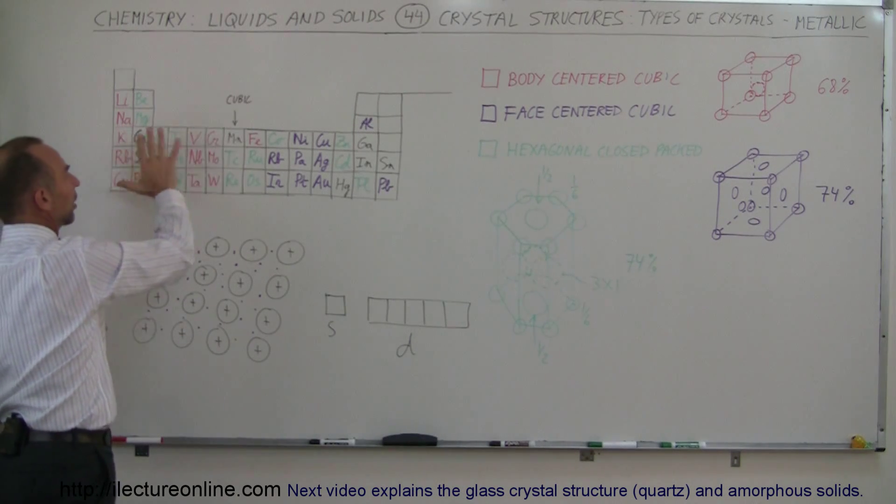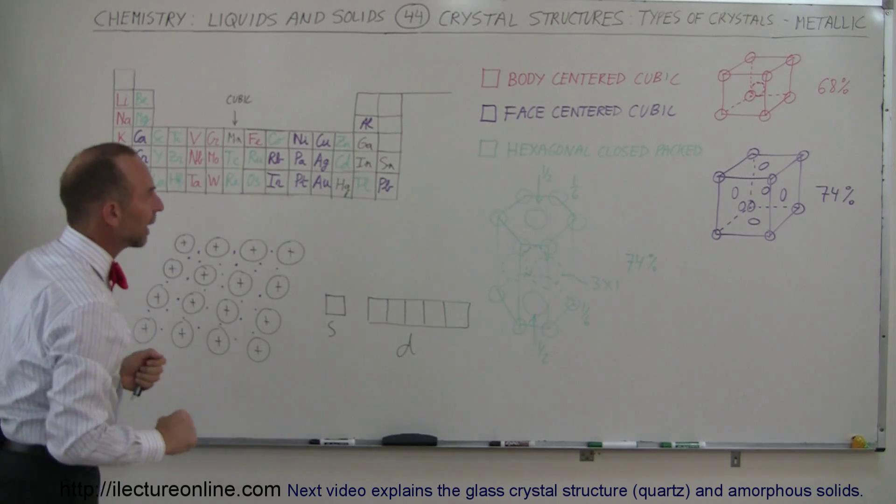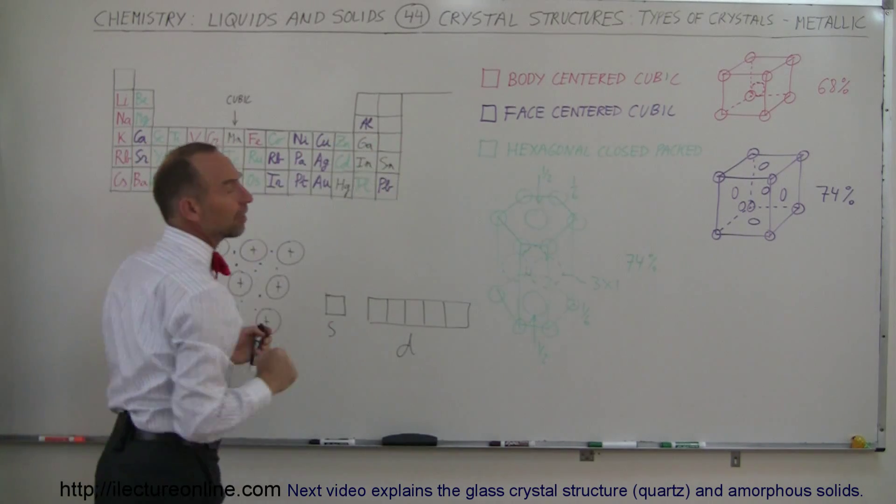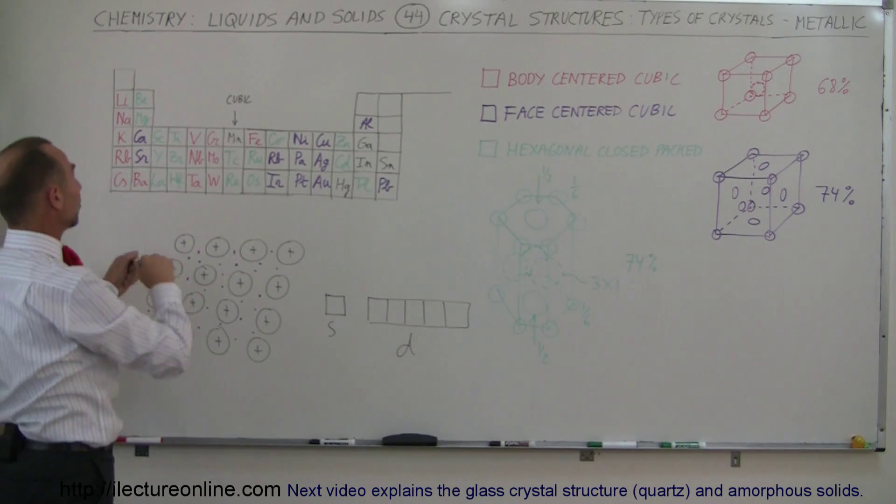What's also very interesting is that you can see I try to color code in this periodic table, the type of crystal structures you have for the different kind of metals.